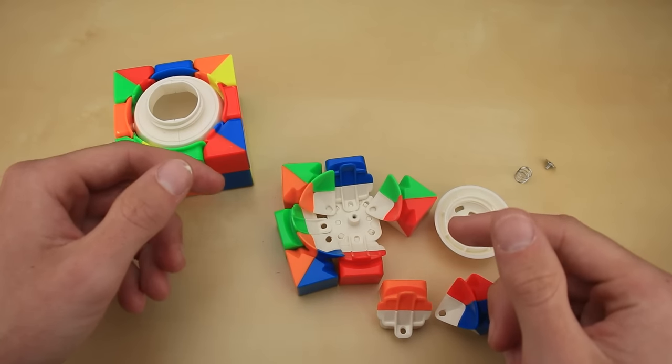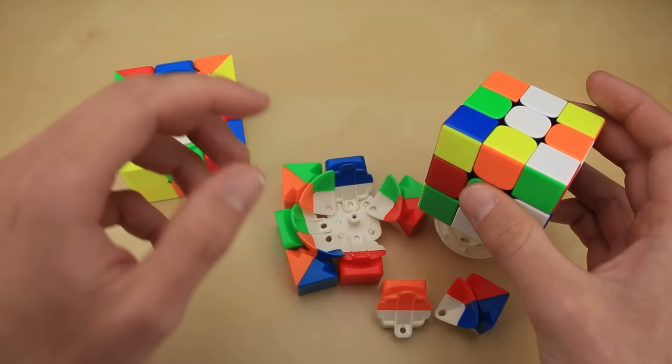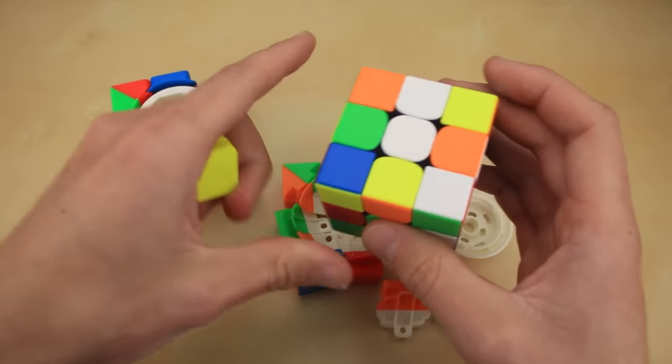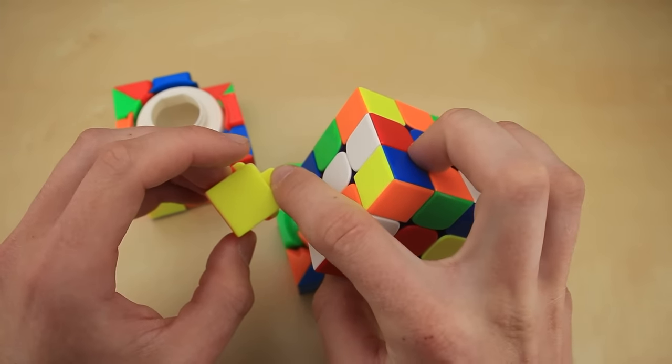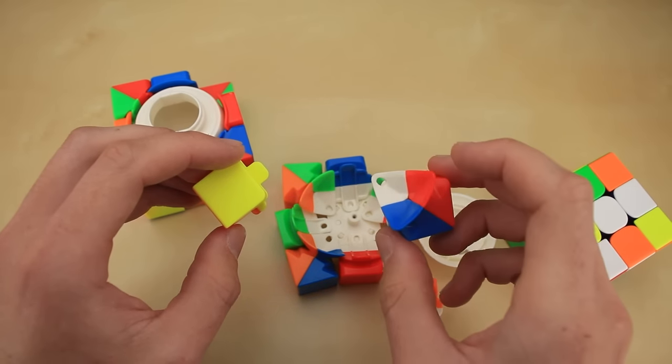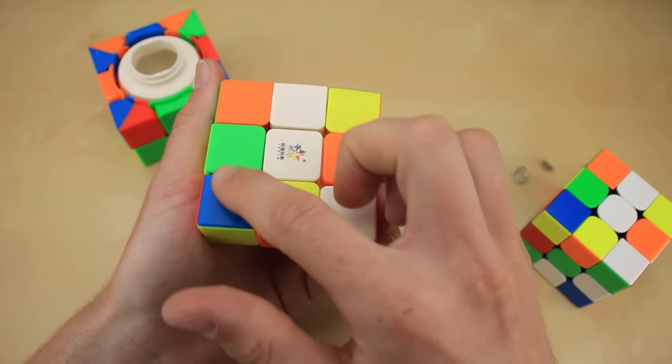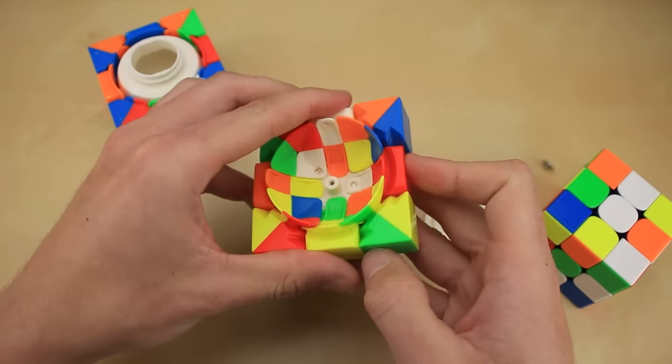So how do we make this cube open only once we've done a specific scramble on it, since it's stickerless and we can't just swap the stickers around? Well, basically what we do, is we take each of the pieces that are a part of this white side, like this yellow and orange edge right here, and then we poke little holes on them, while filling in all the holes on the original white side. That way the cube will only open when it's in this scramble. Or at least, when these nine pieces are arranged together like this, but I think that's still a sufficiently tricky combination to guess.